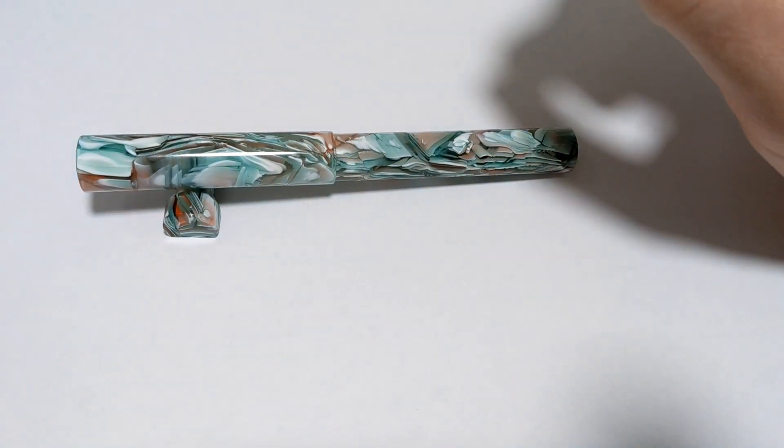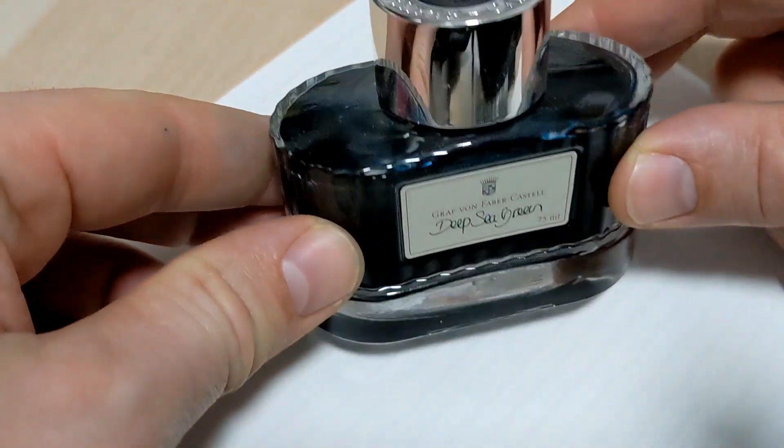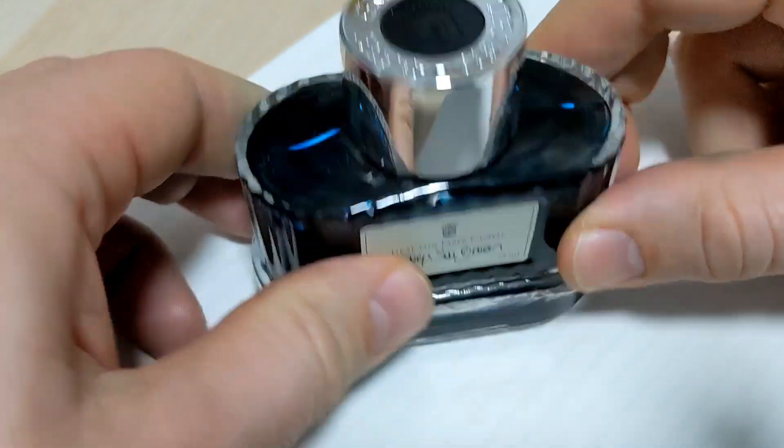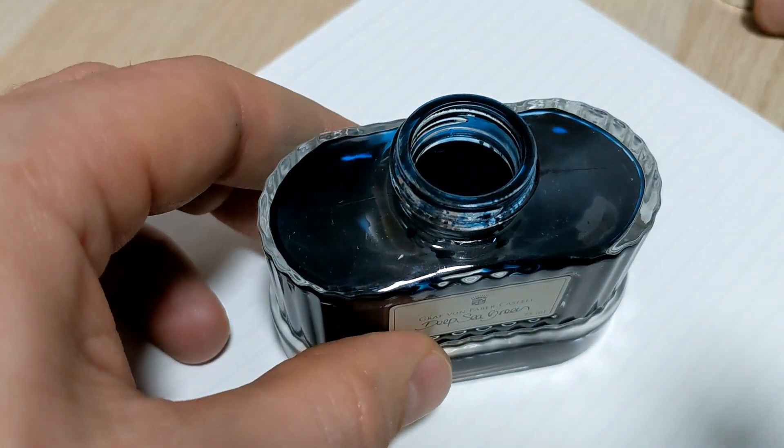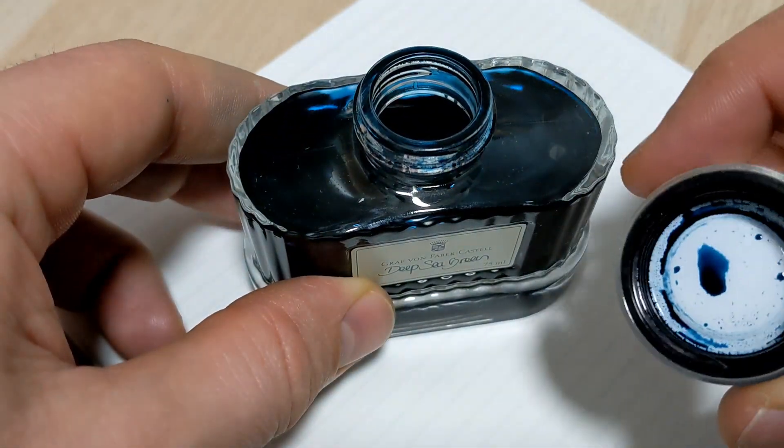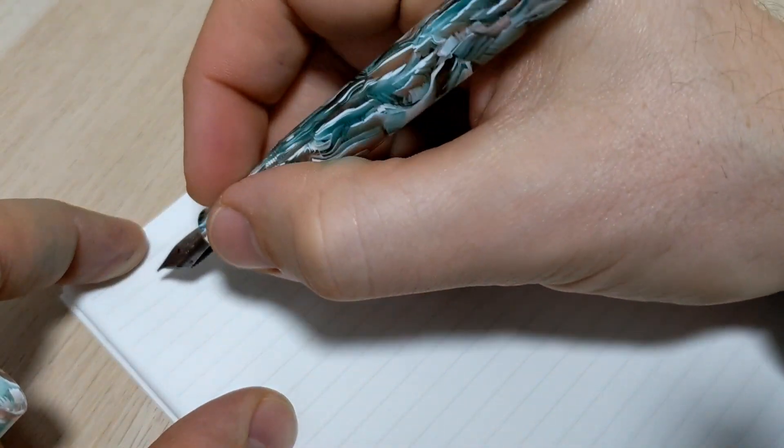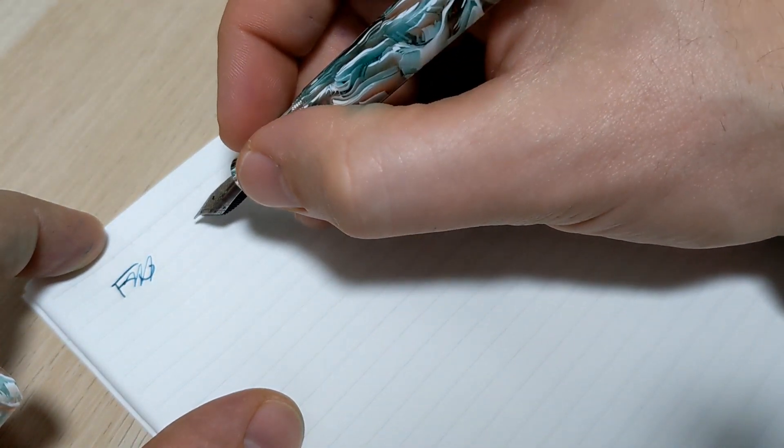I'm going to ink it up and give it a quick whirl. Today I'm using the Faber-Castell Deep Sea Green. One little note: they have such beautiful bottles. This particular ink is very beautiful and the color I thought was going to be amazing, but when you write with it, it just seems like it's missing something. It's just off a touch, not quite saturated enough. But that's a separate comment.